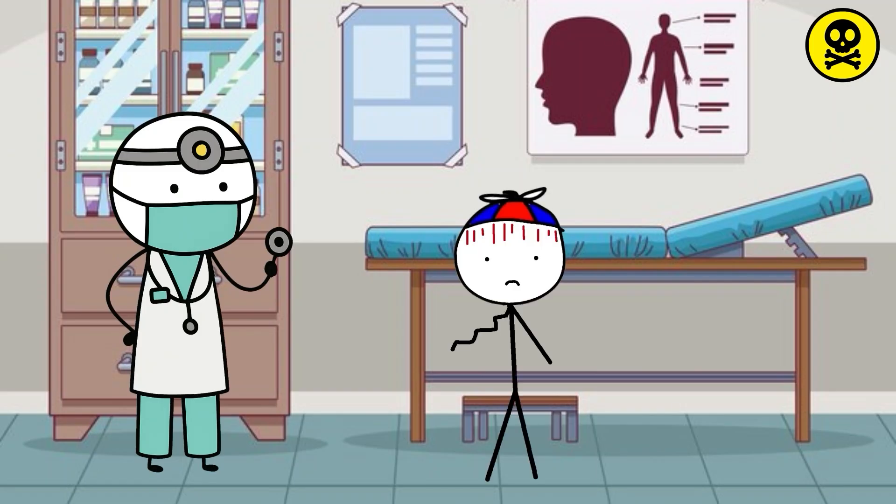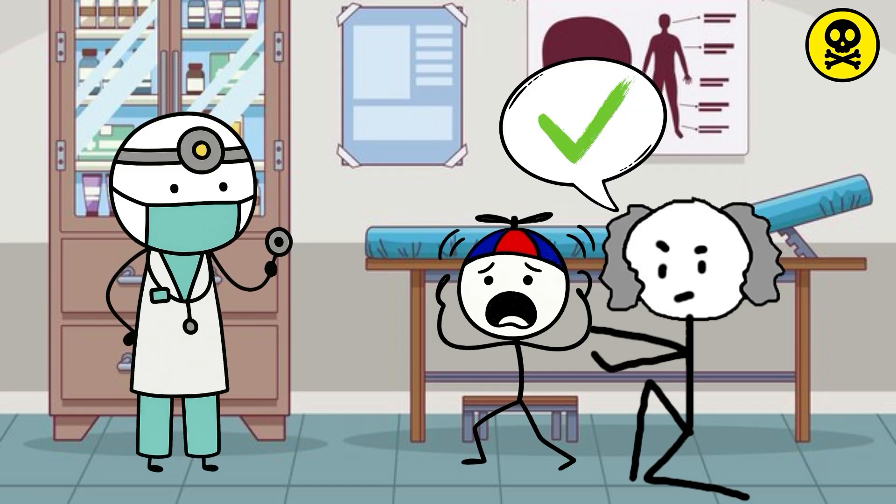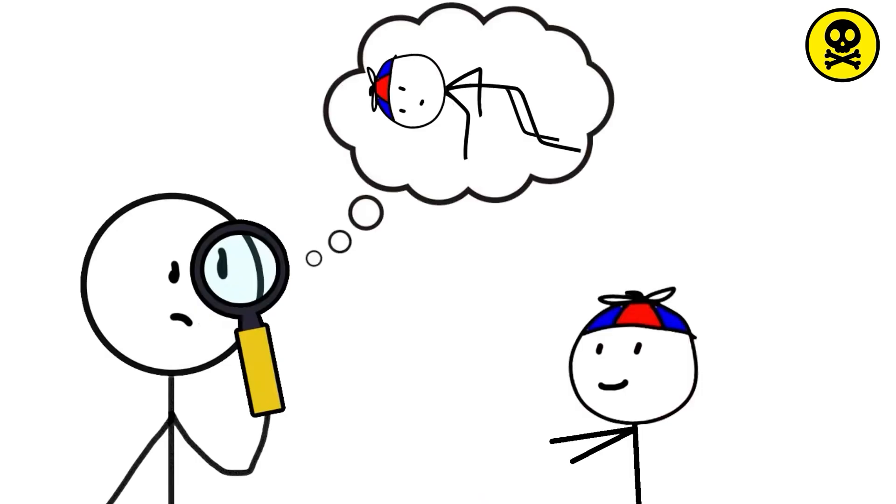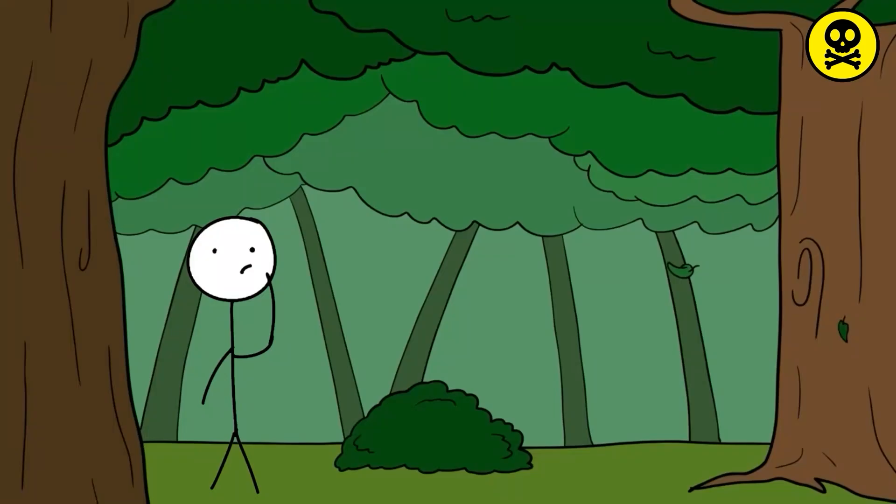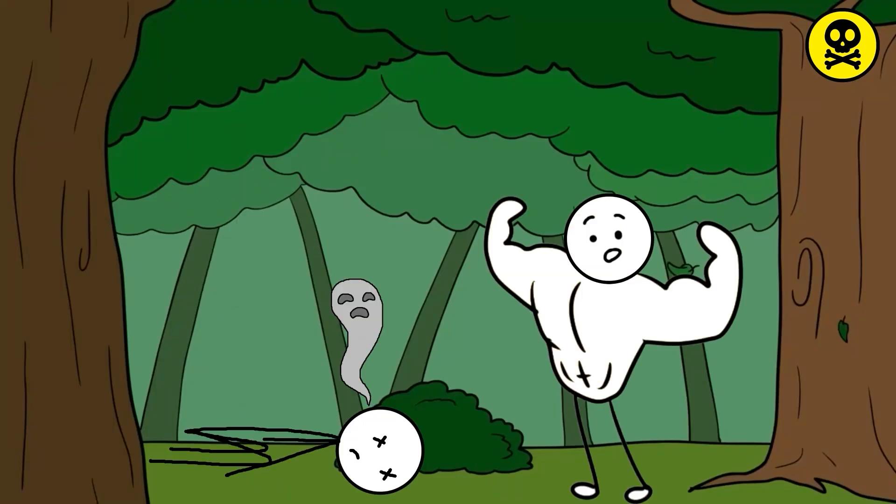Because pain, although unpleasant, is a warning signal. And without that signal, everything depends on constant observation. Checking the body every day, being alert to hits that do not hurt, wounds that do not warn. Living with CIPA does not mean being stronger. It means not knowing when your body is in danger because it simply does not tell you.